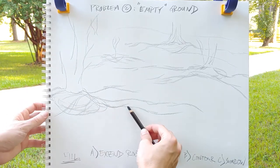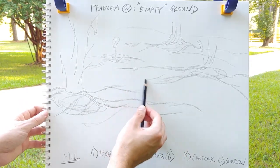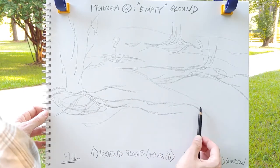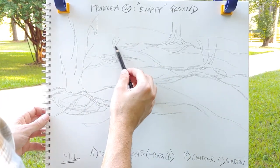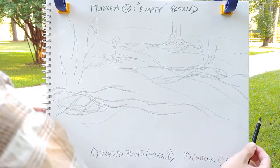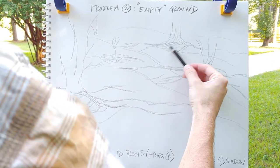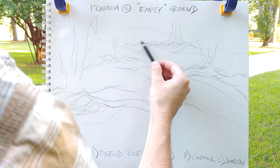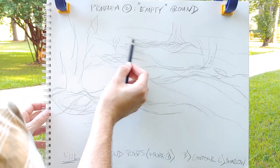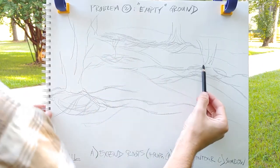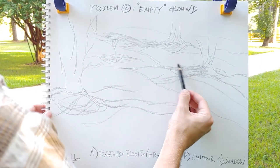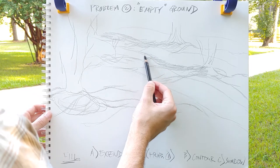When you start to do cross contour lines, you're taking those extended roots out and you're describing how the ground undulates. You're getting across a little bit more information than you would without them, so you're able to not only describe how those roots go across the ground and under the ground, you're able to describe how much they push up and down.